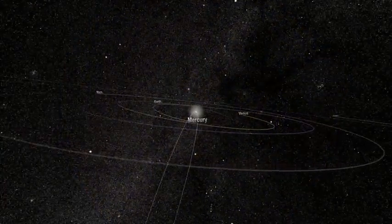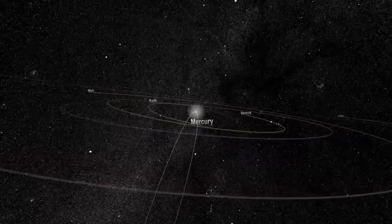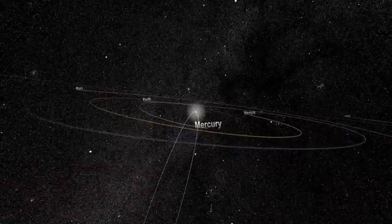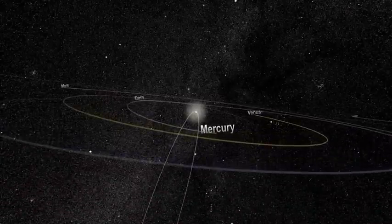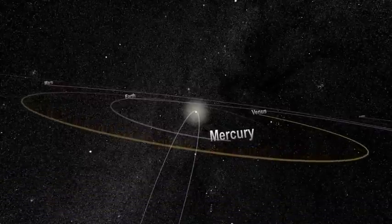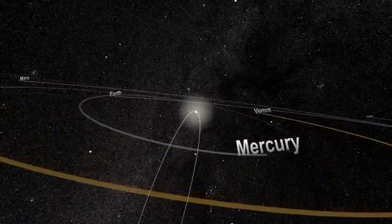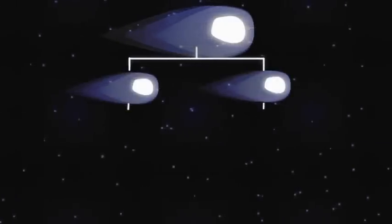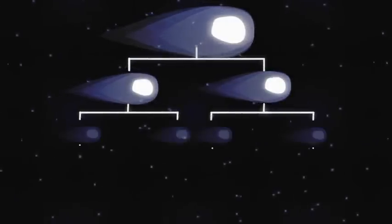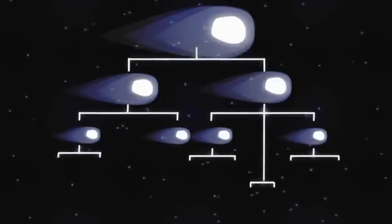Many sungrazing comets follow a similar orbit, called the Kreutz path, and collectively belong to a population known as the Kreutz group. In fact, close to 85% of the sungrazers seen by the SOHO satellite are on this orbital highway. Scientists think one extremely large sungrazing comet broke up hundreds or even thousands of years ago, and the current comets on the Kreutz path are the leftover fragments of it.